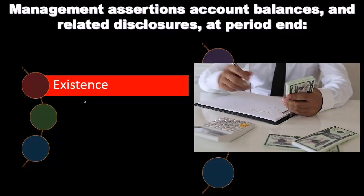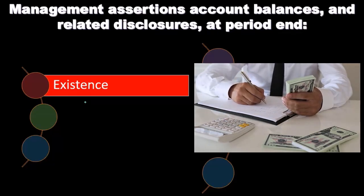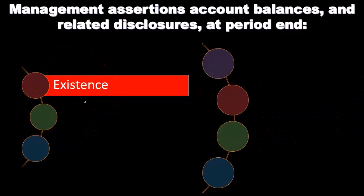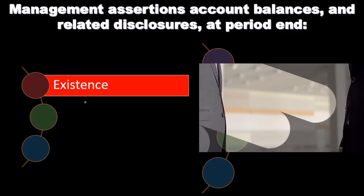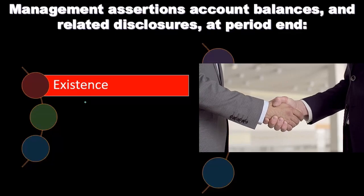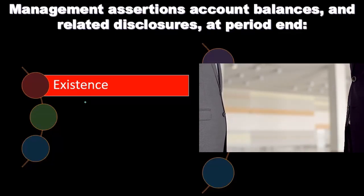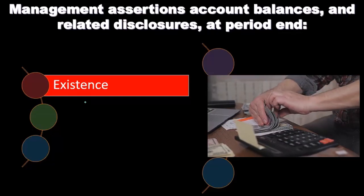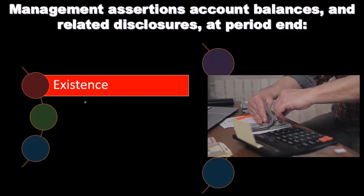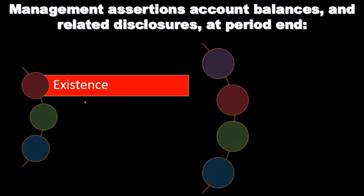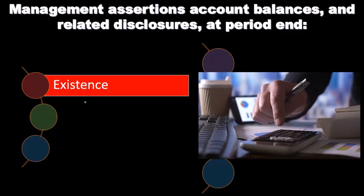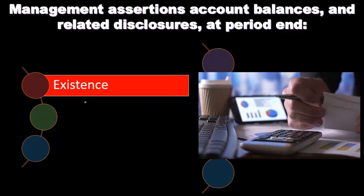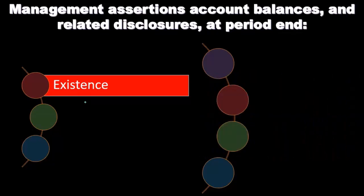As an auditor, you're probably looking at the financial statements with a skeptical slant toward them looking better rather than worse. Now, there are times a company might want to look worse — the one notable case is taxes. Companies may take actions, even fraudulent ones, to look worse for tax purposes because looking worse means paying less taxes. But in every other situation — publicly traded companies, companies seeking loans, companies seeking equity investments — companies typically try to look better than they may actually look.